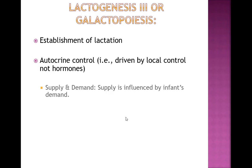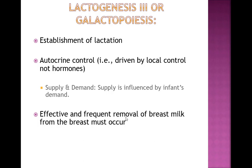Galactopoiesis is driven by local autocrine control, not hormones — it's all about supply and demand. The supply is influenced by the infant's demand: the more the baby wants and the more the mom feeds, the more likely she is to establish lactation. If the baby is latched on but not effectively transferring milk, if the mom is stretching feedings — often referred to as mismanagement of breastfeeding — or if the mom is supplementing heavily with formula, galactopoiesis won't be achieved.